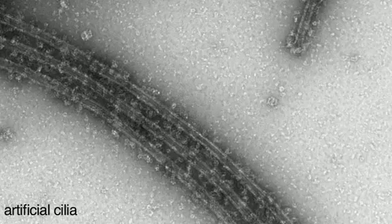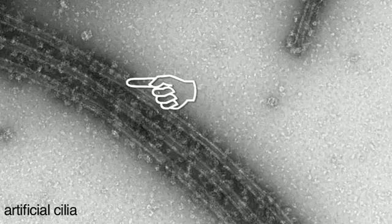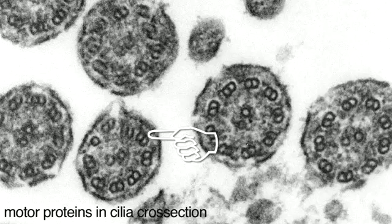The artificial cilia are primarily made of bundle of filaments called microtubules. And sliding along those tubes are things called motor proteins, which actually cause the cilia to bend.